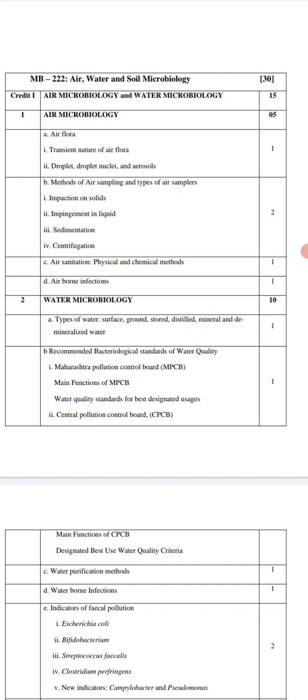Credit one is air microbiology and water microbiology. Let's start with the definition of air microbiology. Air microbiology means it is the study of microorganisms - bacteria, fungi, viruses, archaea - that are present in the atmospheric air. So it is termed as air microbiology: the study of microorganisms present in the atmospheric air.